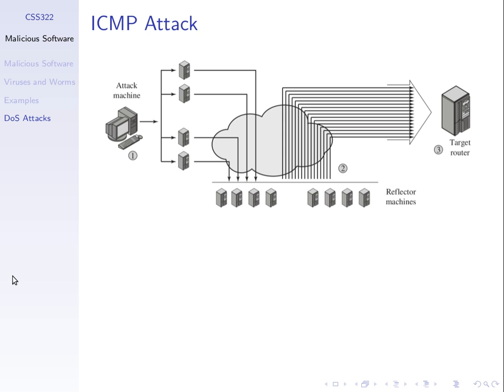Again, the attacker takes control of some slaves — the computers on the left. Somehow it needs to infect those or install software on those computers to initiate the attack. What it gets these slaves to do is send a ping message — an ICMP echo request. The messages from the slave computers go to a set of what are called reflector machines, and they have fake source addresses such that the source address matches that of the target computer, whether it's a server or a router.